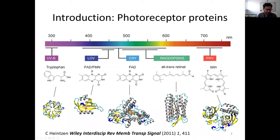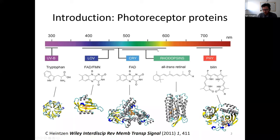Then we have phytochromes, predominantly found in plants. The chromophore in this set of proteins is a linear tetrapyrrole — four rings called pyrroles — with propionates, metabolized from chlorophyll or hemes. In this graph, you can see the absorption range from different photoreceptor families. While this figure was from 2011, rhodopsins were found to cover a range from 475 to 570 nanometers, but in recent years new discoveries have extended the range of retinal proteins to 690 nanometers.